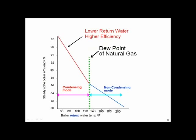We also need to look at return water temperature. This chart plots return water temperature to the boiler versus boiler efficiency. The dotted green line at roughly 130 for natural gas is the dew point — the condensing point. If you have a condensing boiler you said was going to be 99% efficient, but you give it return water at 140 degrees, it's not going to condense. It's not going to be anywhere near that efficiency — it'll be in the 80s. You've got to get the return water cold enough to make it rain in your boiler.